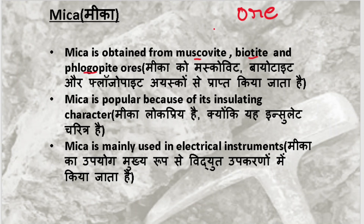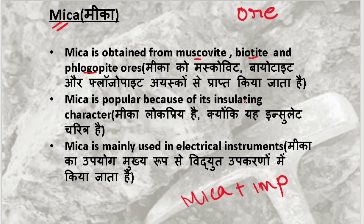The ore contains a lot of things, including Mica, plus impurities. The pure form released from the ore is Mica. It is also known in non-metals. The varieties released from the ore are called Muscovite, Biotite, and Phlogopite.